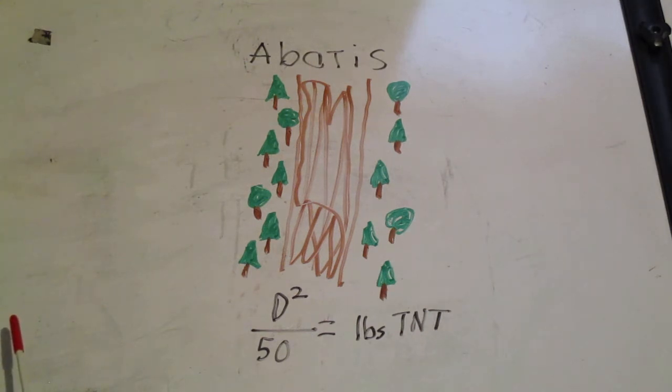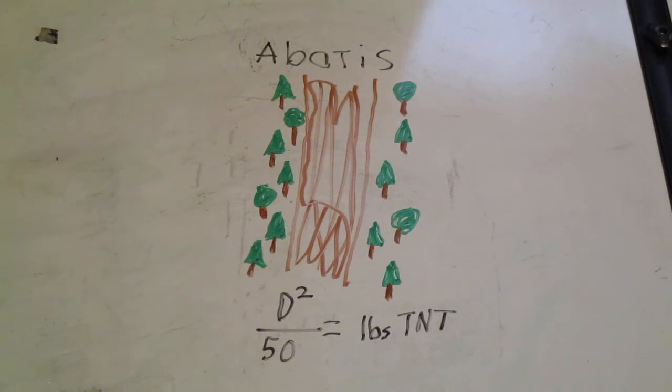So you would get 240 pounds of TNT just for those. Then you would take your 36 inch trees, you had 10 of them. Take 36 times 36 divided by 50, you'll get your pounds per tree, then times 10 because there's 10 trees. Take that total amount and add it to the 240 from the 24 inch trees. That gives you the total amount of explosives you're going to need.